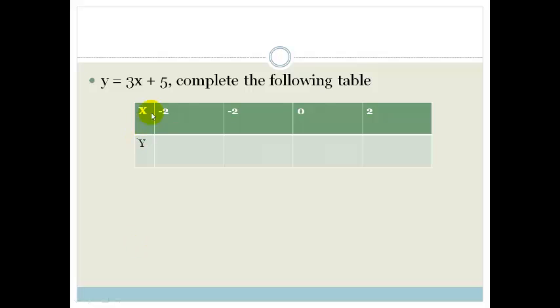if we get given that x is minus 2, what is y? So 3 times minus 2 plus 5 is going to be minus 6 plus 5 which equals minus 1.